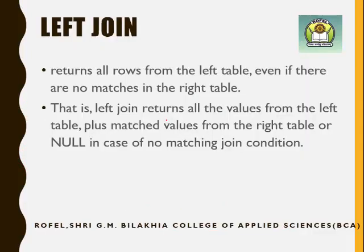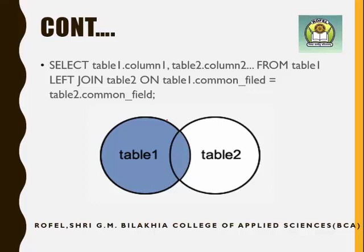Now left join. Left join returns all the rows from the left table even if there are no matches in the right table. That is, left join returns all values from the left table plus matched values from the right table, or NULL in case of no match. So it returns the common matching values plus all remaining values from the left-side table.